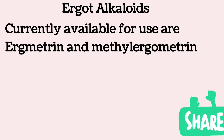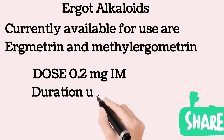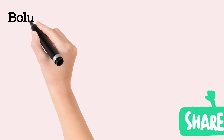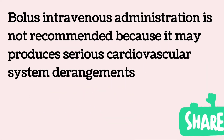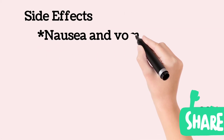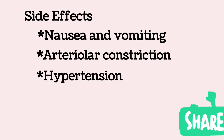Both ergot alkaloid drugs are dispensed in ampules containing 0.2 mg. When administered via the intramuscular route, they have a rapid onset and uterotonic effect usually lasting two to four hours. Bolus intravenous administration is not recommended due to the propensity to cause serious cardiovascular derangements. Even intramuscular administration may cause vasoconstriction, hypertension, myocardial ischemia and infarction from coronary vasospasm, cerebrovascular accident, seizures, and death, though fortunately these serious adverse effects occur rarely.